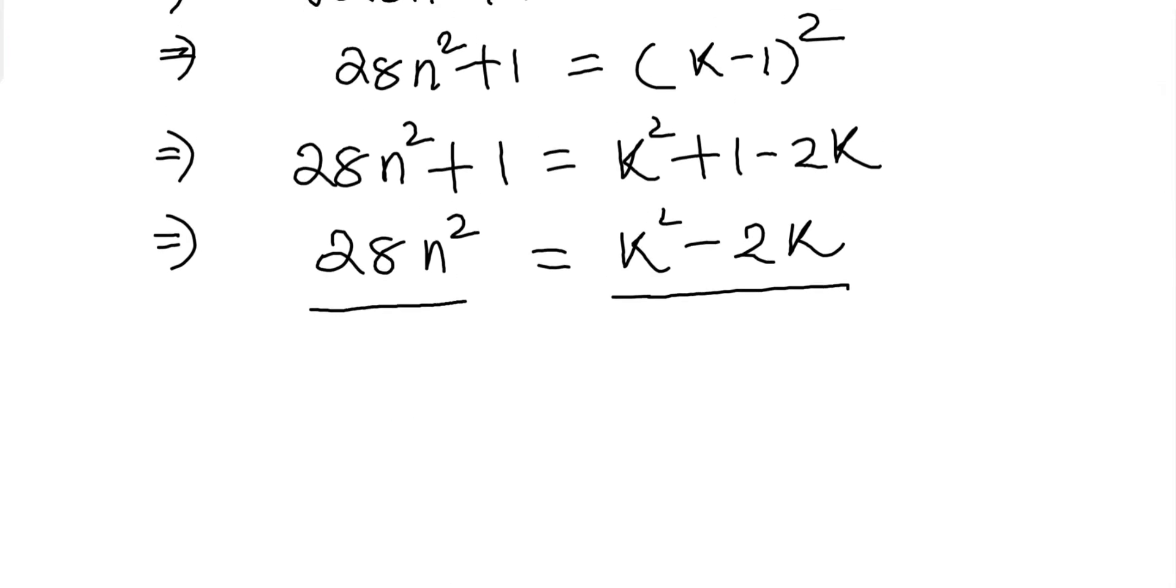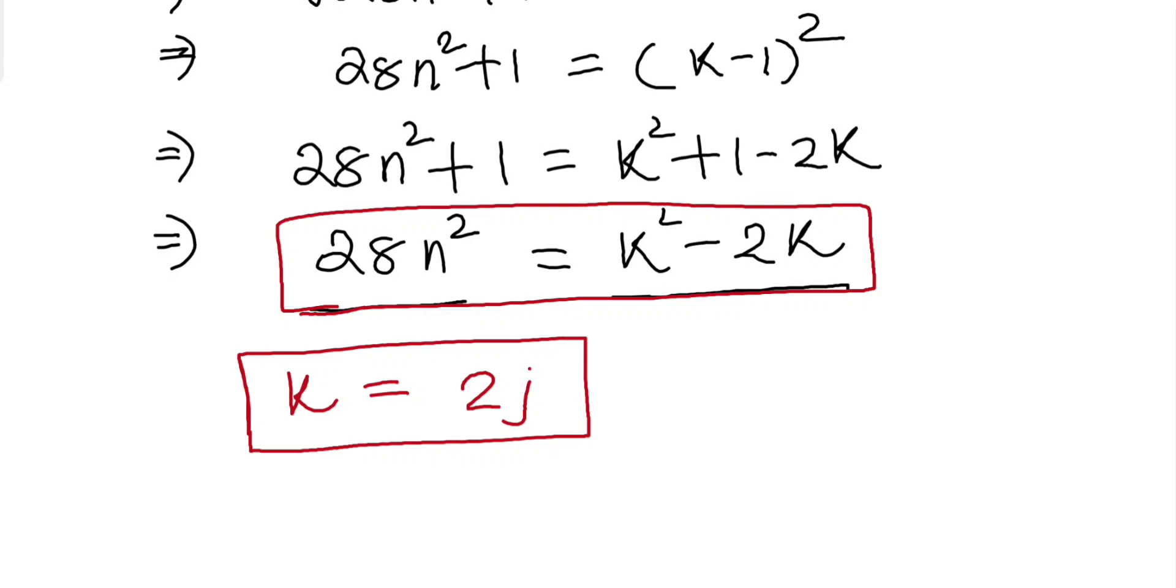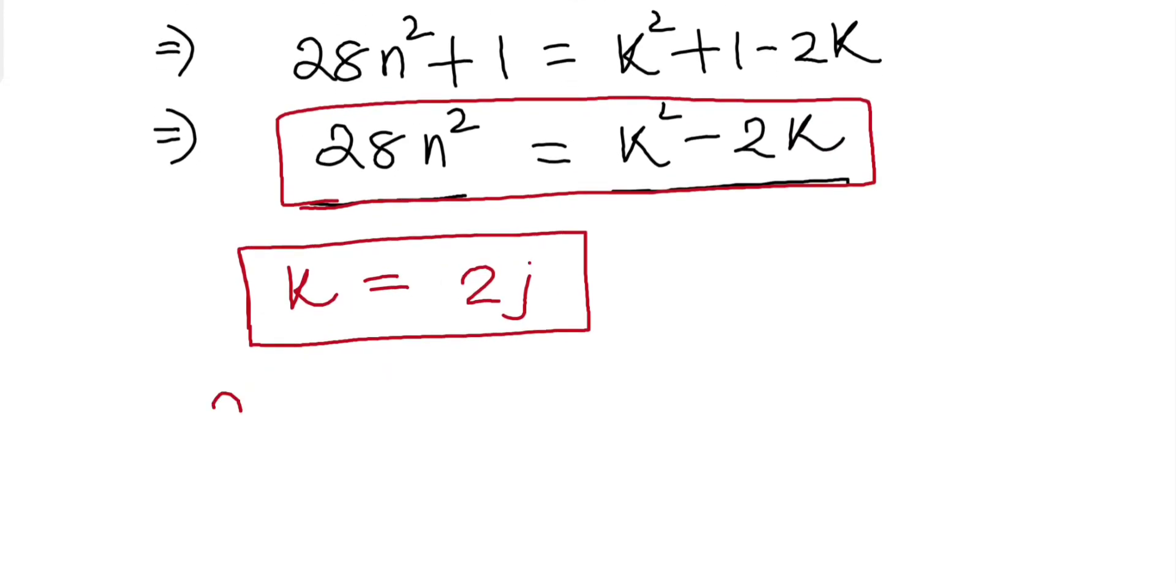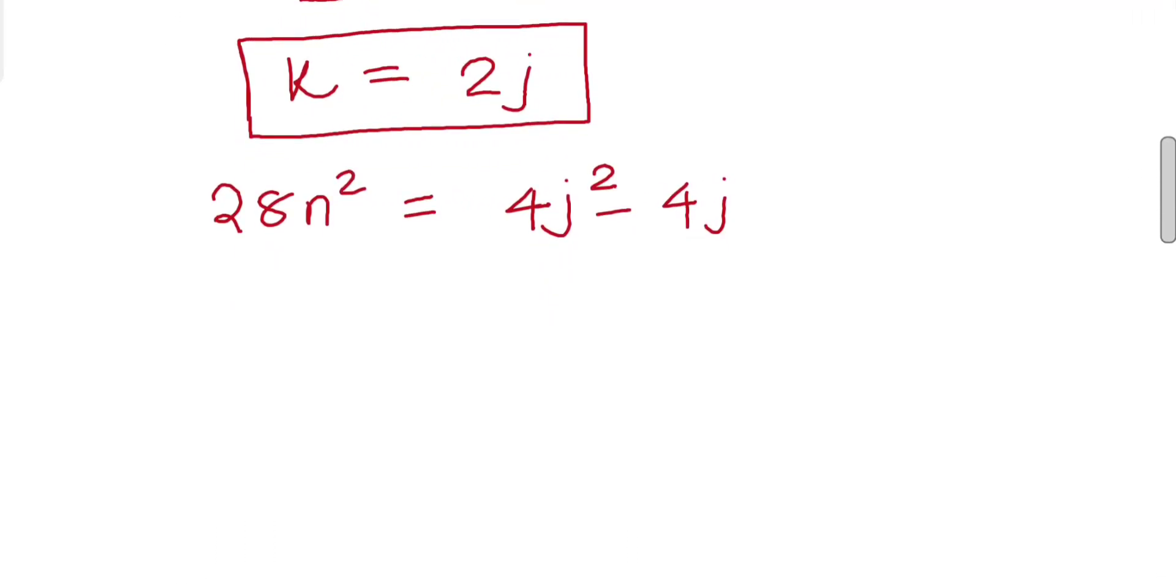So now let's take k = 2j and substitute it in this equation. By substituting we will get 28n² = 4j² - 4j. Now again cancelling 4 from both sides we get 7n² = j(j - 1).